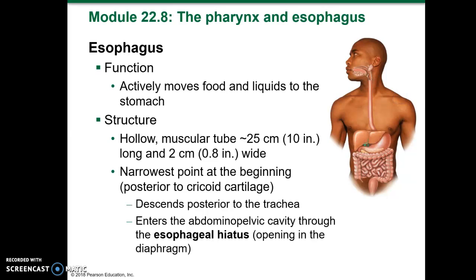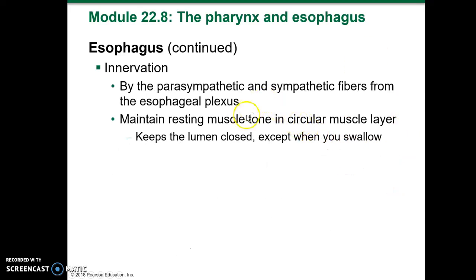The function of the esophagus is to actively move food and liquids to the stomach. It's a hollow muscular tube about 10 inches long and about 0.8 inches wide. The narrowest point is at the beginning, posterior to the cricoid cartilage. It descends posterior to the trachea and enters the abdominal pelvic cavity through the esophageal hiatus, the opening in the diaphragm. Innervation is by parasympathetic and sympathetic fibers from the esophageal plexus.